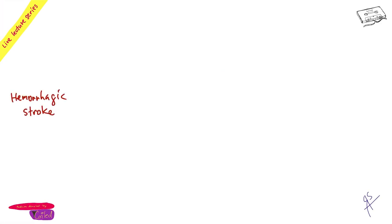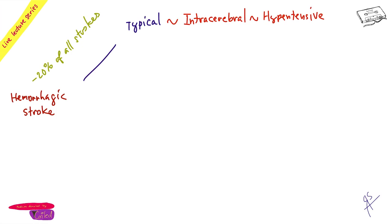With hemorrhagic strokes, they represent twenty percent of all strokes. You can divide them into typical and atypical strokes. 'Typical' means based on location — and the location refers to the perforating arteries, which we discussed just a few minutes ago.